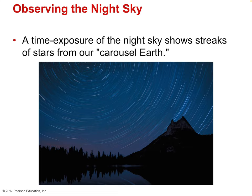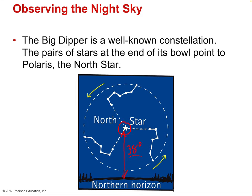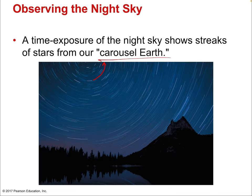A time exposure of the night sky shows streaks of stars from Earth's rotation. Stars appear to rise and set, while circumpolar stars take a circular path over the duration of a night and never rise or set. The North Star, for example, remains essentially fixed, while stars around it are the circumpolar ones.